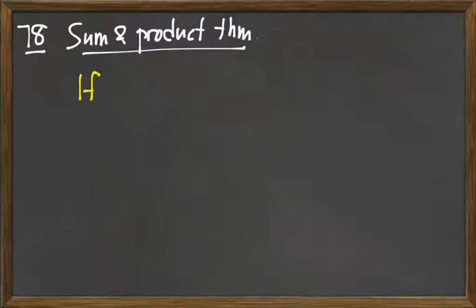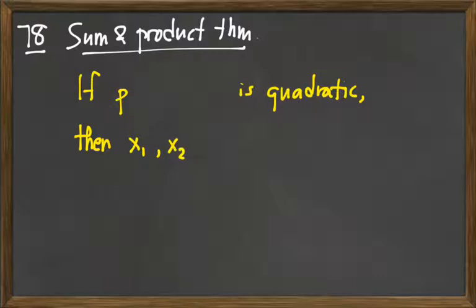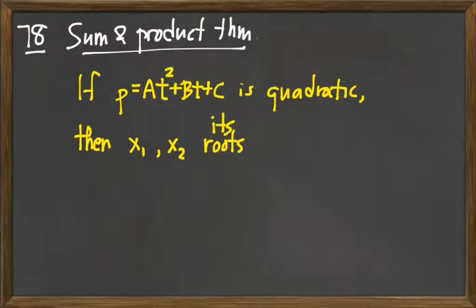So let's move to that briefly, because Viète's theorem, it turns out, is just a suitable generalization of the sum and product theorem result. So remind me how theorem 78, sum and product theorem, what did it say? Okay. So if P is a quadratic polynomial, so degree 2, then what? x1 and x2, its roots. And can be factored into A times T minus x1 times T minus x2. Okay. And so we were assuming that this A here was the leading coefficient of P, right? So P was AT squared plus BT plus C.